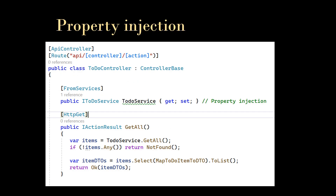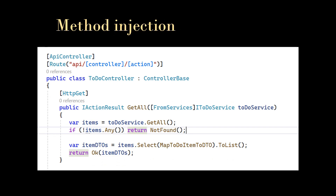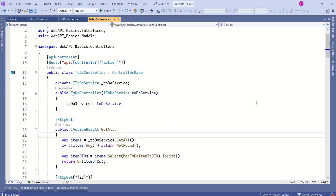Here is an example for property injection. I have removed the constructor and added ITodoService as a property, using the FromServices attribute — which is very important to indicate property injection. The dependency injection container will then provide the instance. Here is an example for method injection: instead of a constructor or property, the dependency is injected directly inside the method as a parameter, again using the FromServices attribute. In our web API, we are using constructor injection, which is the most widely used approach.